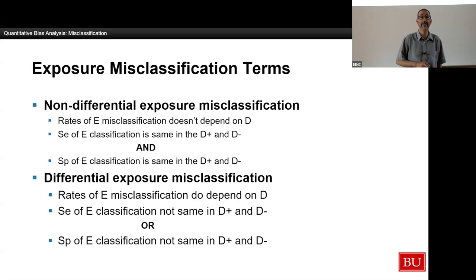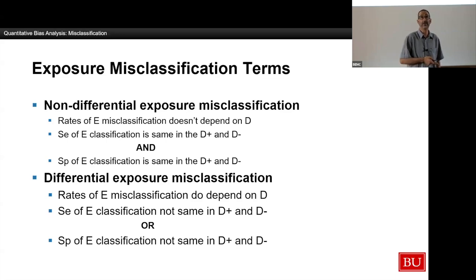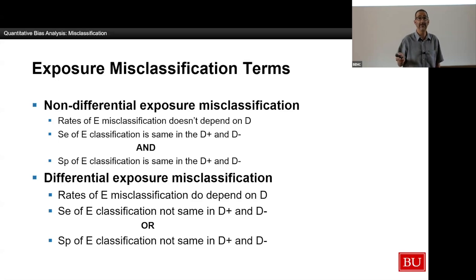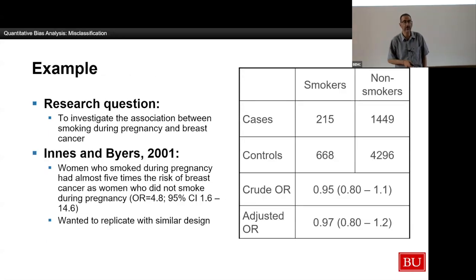When it comes to misclassification, we differentiate non-differential and differential misclassification, focused here on exposures. For non-differential misclassification, the rate of misclassification of exposure does not depend on the outcome — both the sensitivity and specificities of exposure classification are the same in those with and without the outcome. If it's differential, the sensitivity and/or specificities differ within levels of the outcome. To illustrate how we can use quantitative bias analysis, I'm going to show a study done by my colleague Aliza Fink, one of the authors of the first edition of the textbook.